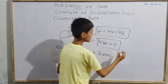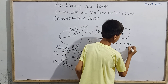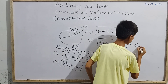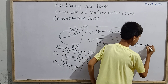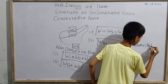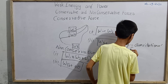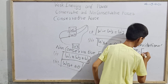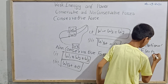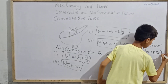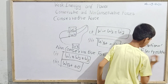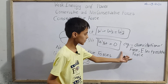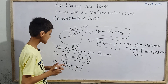Now let us take some examples. Examples of conservative forces: first, gravitational force — gravitational force is a conservative force. Second, electrostatic force — electrostatic force is also a conservative force. So those are two examples of conservative forces.